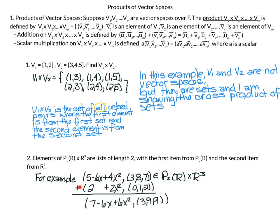This is how addition on our product of vector spaces works. You always are adding things in the same vector spaces together — you don't add polynomials to vectors in R3. It's always polynomials to polynomials, vectors to vectors; each element is added element by element.